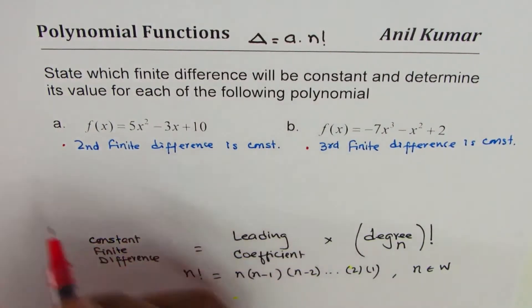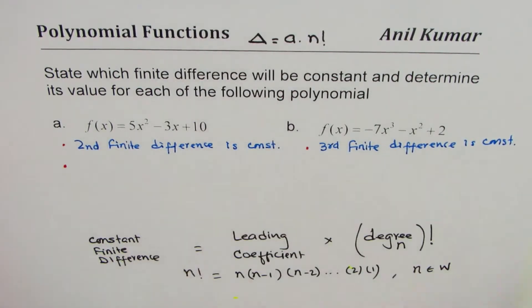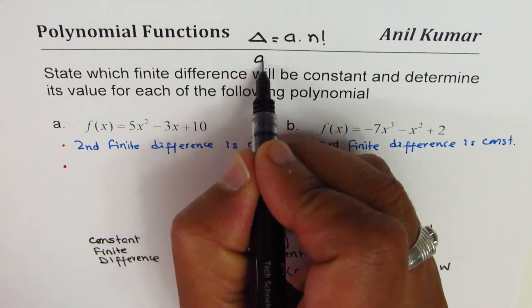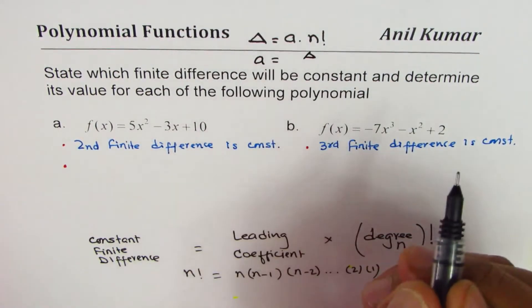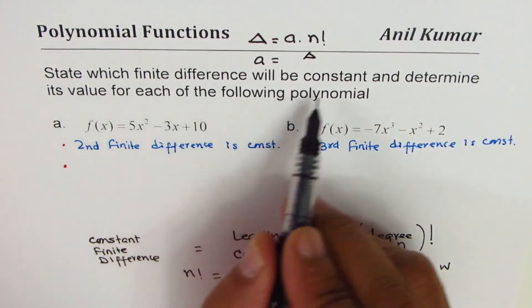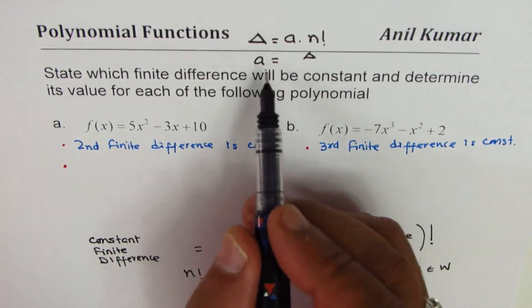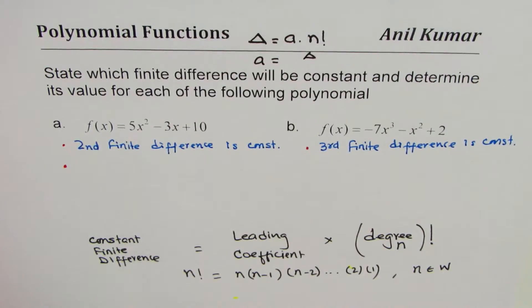Perfect. Now we need to find the value of this finite difference. We can use the formula. So we can rearrange and write what a is, is finite difference. So we just need to find the finite difference. We know degree, so let's calculate.